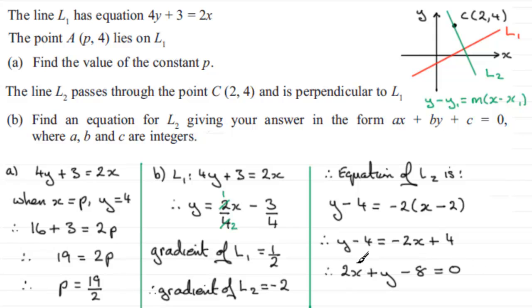So you can see I've got it now in the form AX plus BY plus C equals 0, where A would be 2, B would be 1, and C would be minus 8. Not that we have to give those values for A, B and C. We're just told that they must be integers.